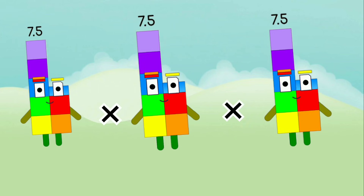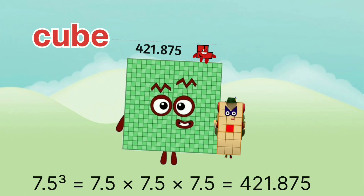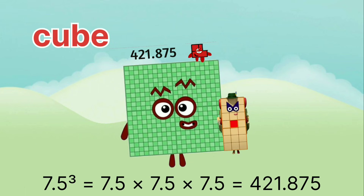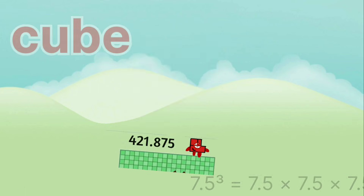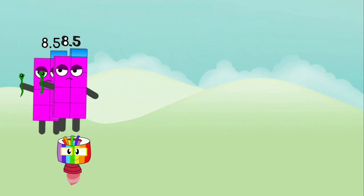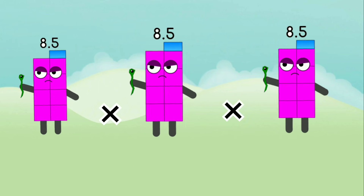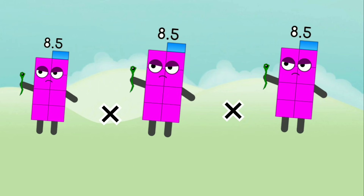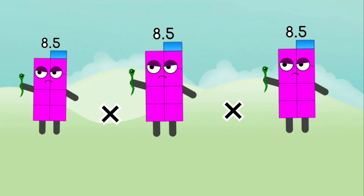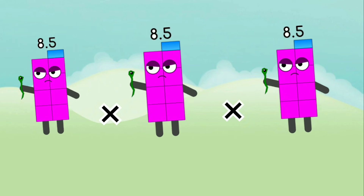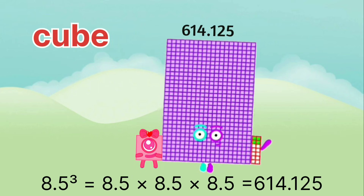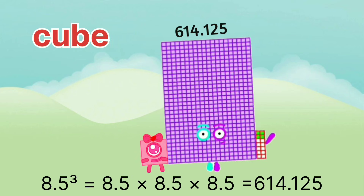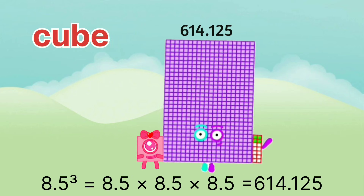7.5 x 7.5 x 7.5 equals 421.875. 8.5 x 8.5 x 8.5 equals 614.125.